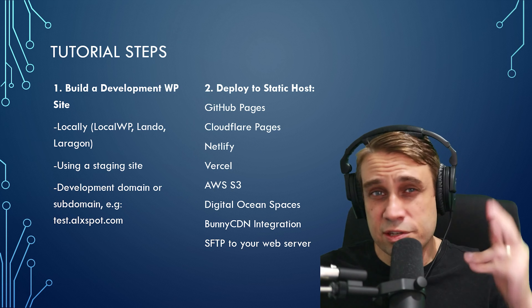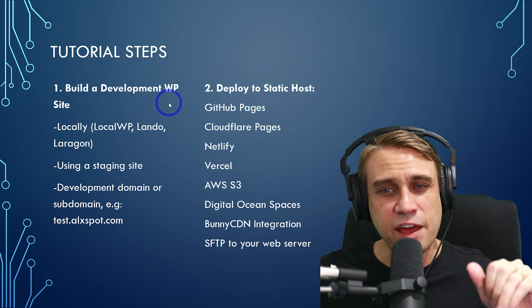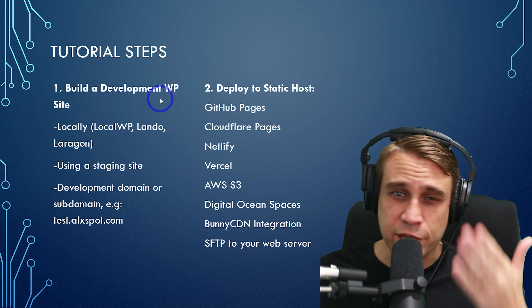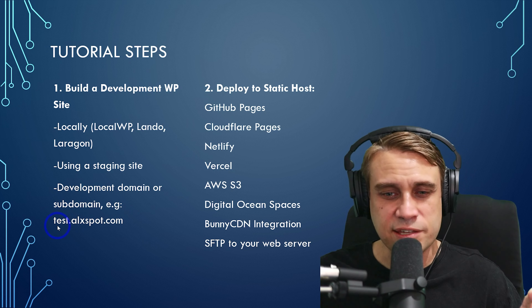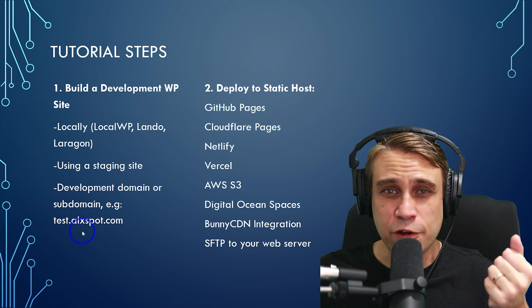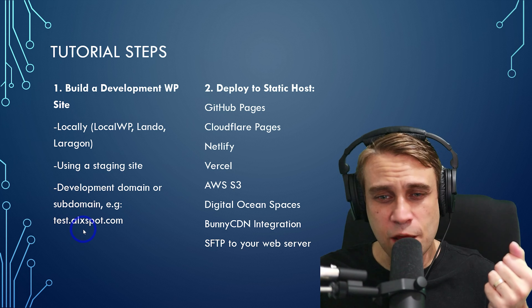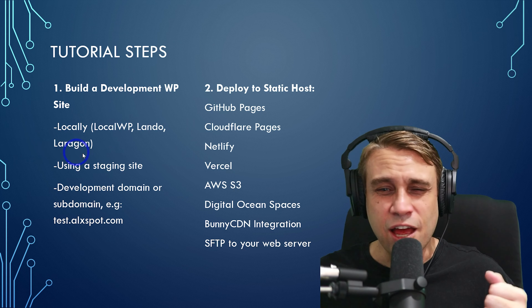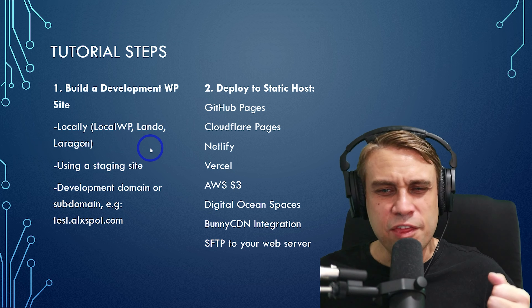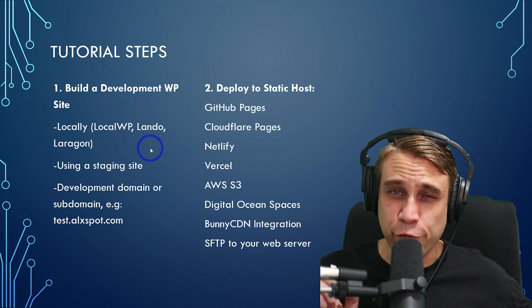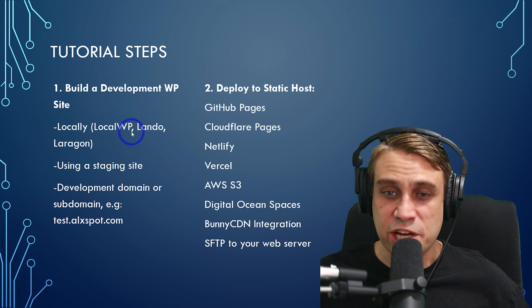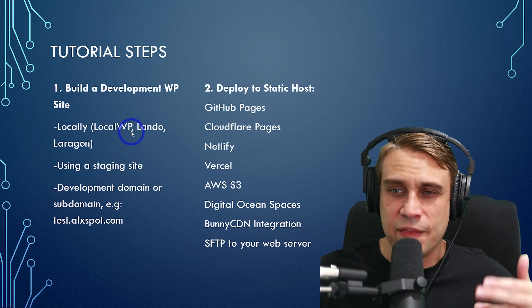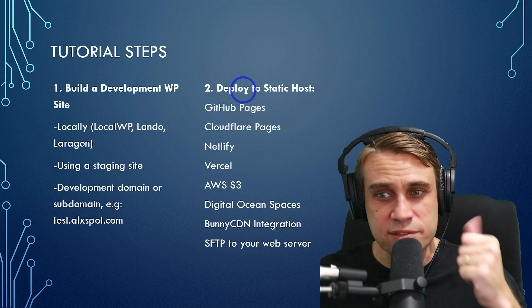This tutorial consists of two basic steps. First, we have a development WordPress site - you can do this however you want. In my case, I'm going to use a test subdomain on a domain I already have set up, but you can use a staging site. You can even do this locally from your own hard drive using something like LocalWP, Lando, or Laragon - these are free and you don't need any web hosting. You can generate your sites on your own computer and then deploy them to the static host. That is step two.